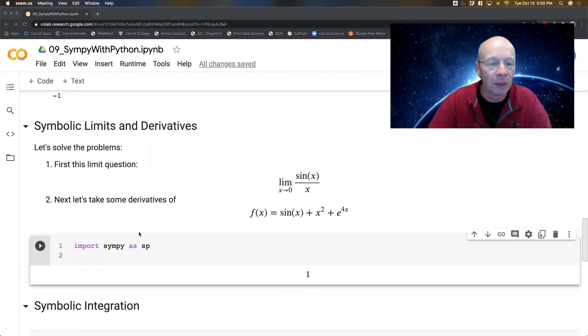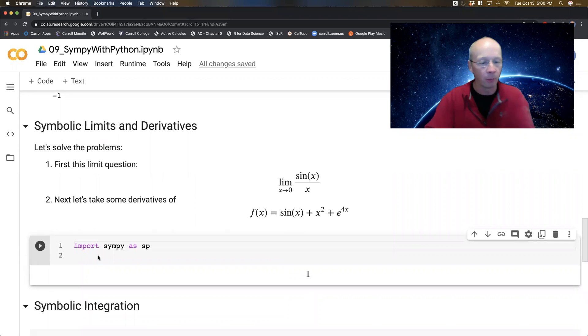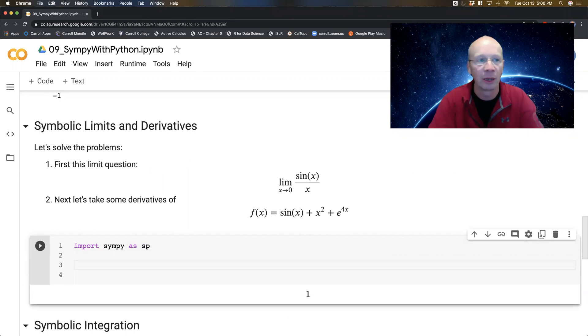So the first one is going to be a limit question. And I'm going to start by importing SymPy as SP. SP is the nickname that I like to use for SymPy. You could always use a different nickname if you wanted to, but then of course your code would be completely unreadable by any other human. You don't want that.